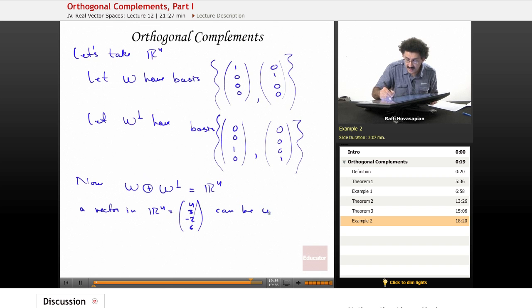it can be written as a vector from this subspace plus a vector from this subspace, just like what we defined. That's what the direct sum means. This W plus W perp means take a vector from here, add it to a vector from here, and you have a vector in the sum, which happens to be R4.